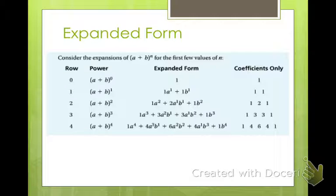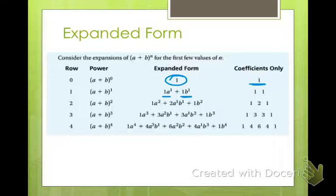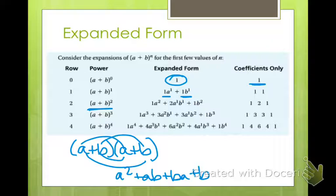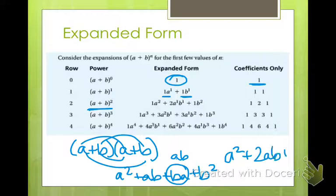In expanded form, if we take a plus b to the 0 power, anything to the 0 power is 1, so our coefficient is 1. A plus b to the first is just itself: 1a plus 1b. Now, a plus b squared — this is where the FOIL method comes in. We do first a squared, outer plus ab, inner plus ba, last plus b squared. We always write terms in alphabetical order, so 1ab plus 1ab gives us a squared plus 2ab plus b squared. Your coefficients are 1, 2, 1.